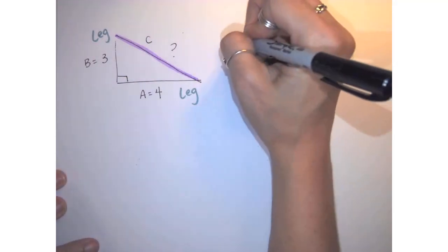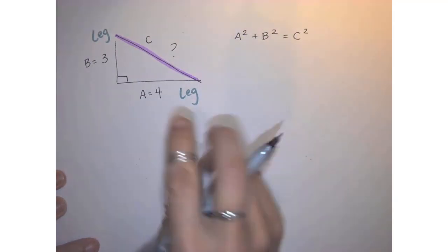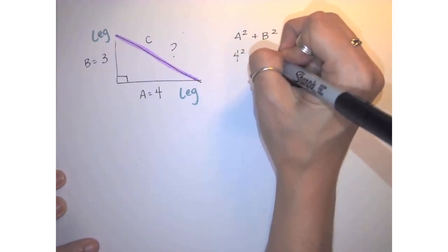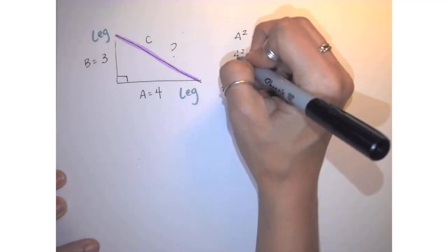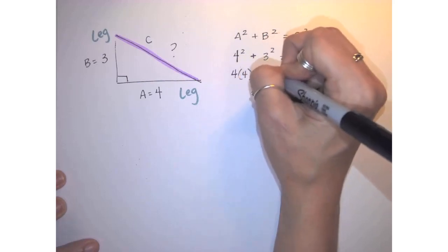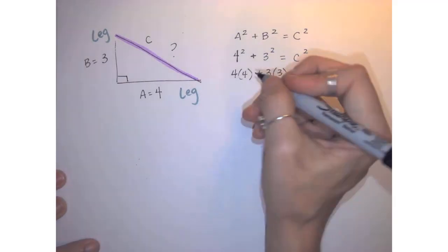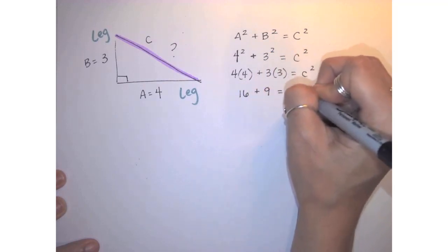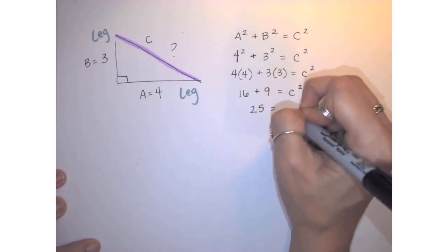The Pythagorean Theorem tells us that A squared plus B squared equals C squared. A is 4, so 4 squared plus B is 3, so 3 squared equals C squared. When I square a number, it means I multiply the number by itself. So 4 squared is 4 times 4, and 3 squared is 3 times 3. 4 squared is 16, plus 3 squared is 9, and that equals C squared. 16 plus 9 equals 25, so 25 equals C squared.